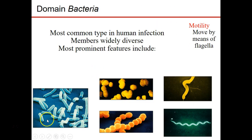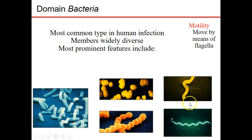Bacteria can be rod-shaped. They can be found in clusters of coccus shapes, in chains of coccus, or in chains of rods. They can also be found as spirochetes or spiral-shaped. They reproduce via binary fission and do not reproduce sexually at all. Most that are motile use flagella — they can have a single flagellum or multiple flagella throughout or around their body.